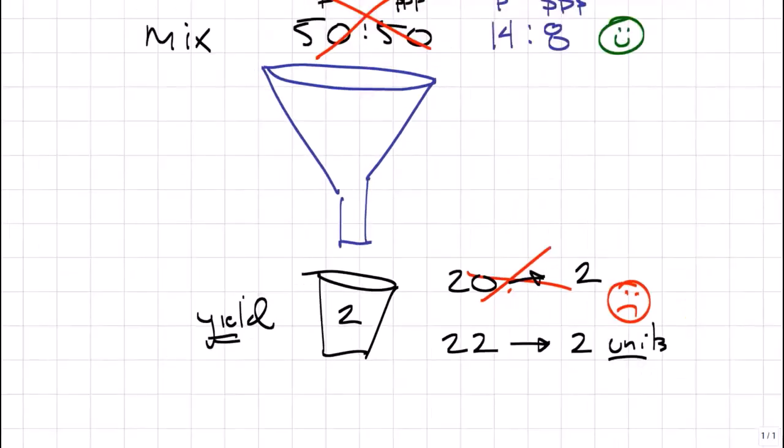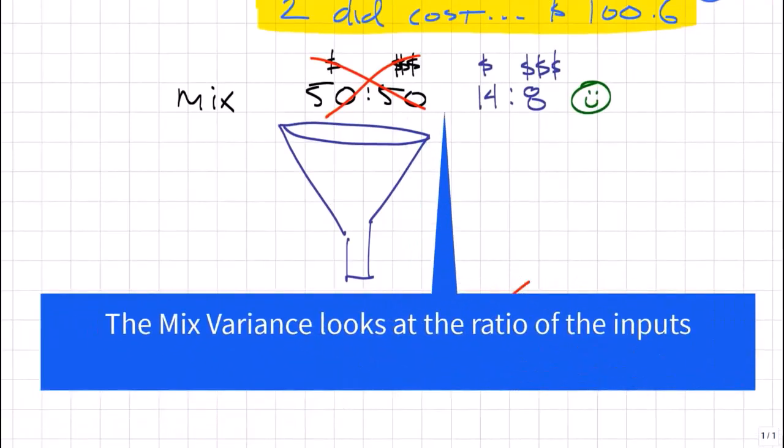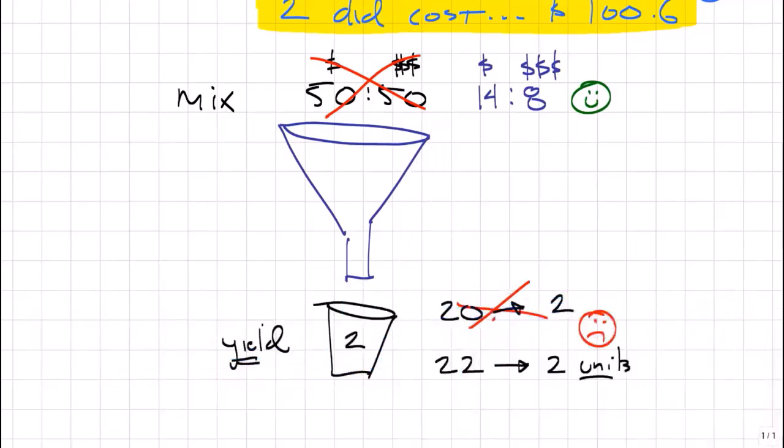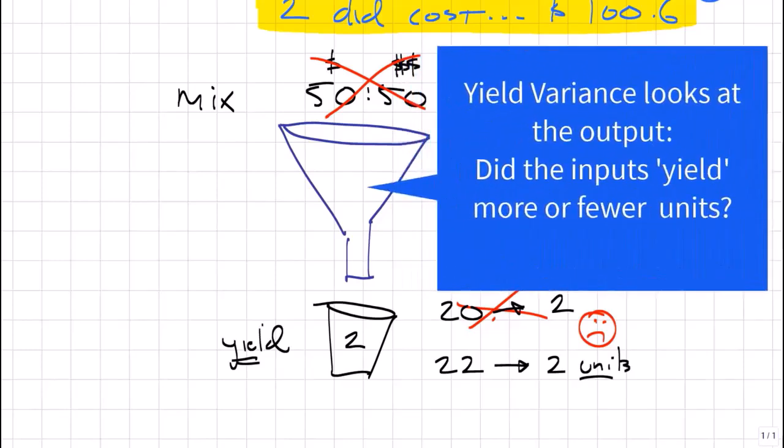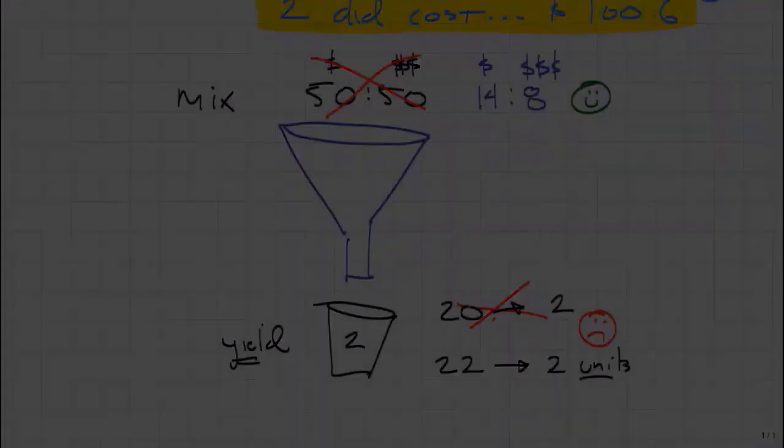There you have it. Mix and yield. Mix variance is looking at the ratio of the inputs. Did we use more or less of the cheap stuff versus the expensive stuff? The yield variance is looking at the outputs. How much input did it take to yield our output? Guys, there you have it. That is the mix and the yield variance in a nutshell. Hopefully that sheds some light on this topic for you. At this point, please go back to your notes or your textbook and have another look at this topic. Hopefully it makes sense for you. Bye for now. This is Steve signing out. We will see you next time. Bye.